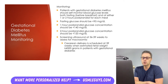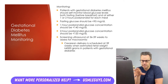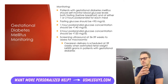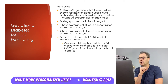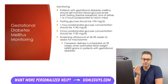In addition to glucose monitoring, all gestational diabetes patients should have a third trimester ultrasound performed at 36 to 39 weeks to assess for macrosomia. If the estimated fetal weight is greater than or equal to 4,500 grams, indicating fetal macrosomia, then a C-section delivery is scheduled to prevent complications associated with macrosomia.